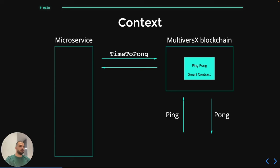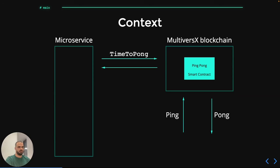We can also call TimeToPong on the smart contract, which, once we have pinged the smart contract, will tell us how many seconds we need to wait until we can Pong again. So we can ping the smart contract, and from time to time call TimeToPong. When TimeToPong is zero, that means we can now Pong, and when we Pong we will get back the funds.